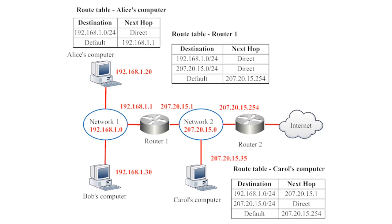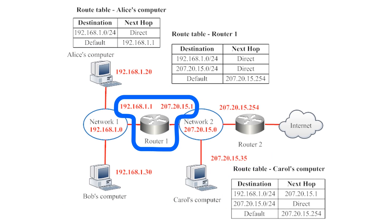This next illustration helps us to see how information is routed. In this illustration, we have two networks, network 1 and network 2. You might notice that router 1 is connected to both networks, and so it has two different IP addresses. When you're looking at router 1 as a member of network 1, its IP address is 192.168.1.1. But when you're looking at router 1 as a member of network 2, its IP address is 207.20.15.1. Those two IP addresses don't refer to different devices; they just refer to the same device from different perspectives on different networks.